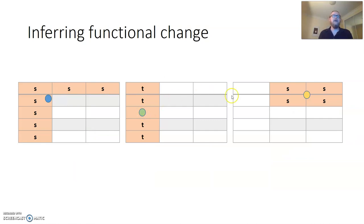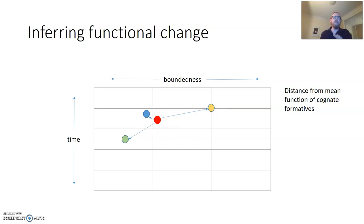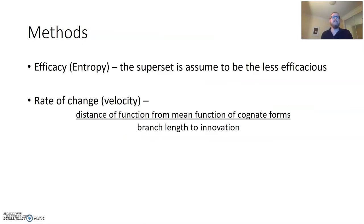I did this for all forms in each language, then took the mean position for each set of cognates as an estimate of how much functional change an affix has undergone over time. I then created a velocity — a rate of change — by dividing that distance by the branch length.